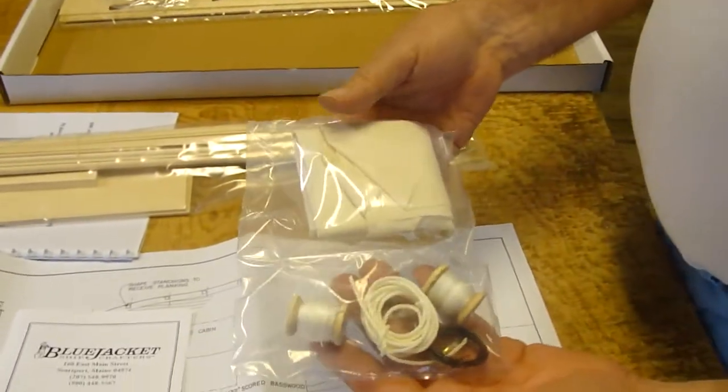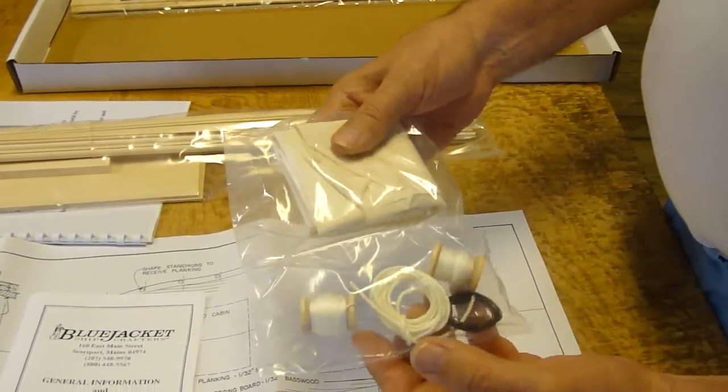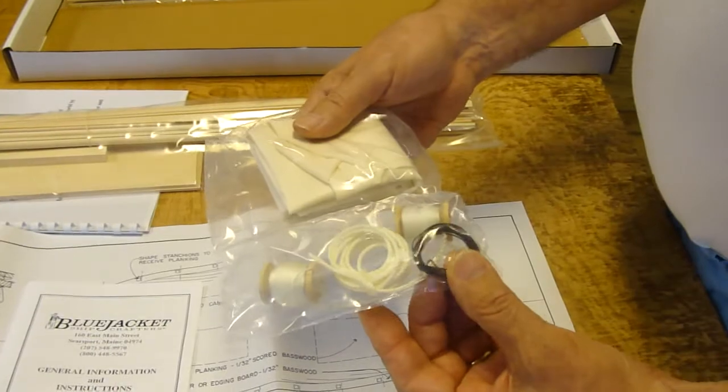There's a rigging package that has two kinds of white thread, muslin sailcloth and wire.